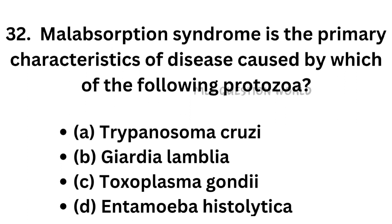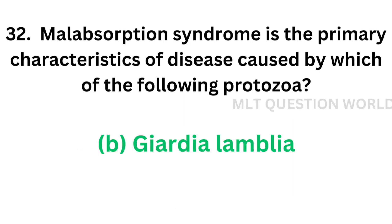Question number 32: Malabsorption syndrome is the primary characteristic of the disease caused by which of the following protozoa? Option A: Trypanosoma cruzi, option B: Giardia lamblia, option C: Toxoplasma gondii, option D: Entamoeba histolytica. The correct answer is option B, Giardia lamblia. Malabsorption syndrome is associated with Giardia lamblia.